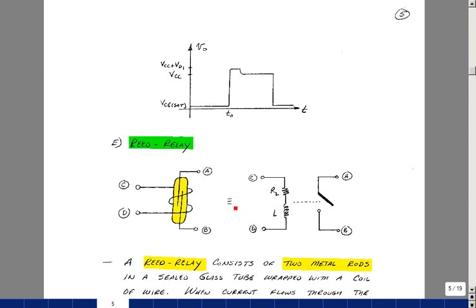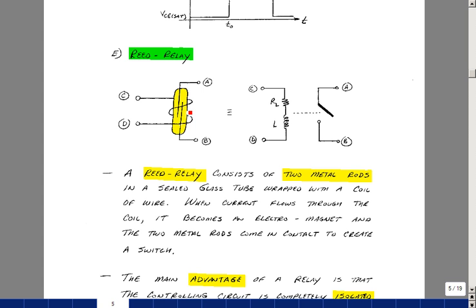The relay we're going to use in lab is called a reed relay. What it is, it's two metal rods with a coil wrapped around it. When voltage is applied to the coil, which has some inductance and some series resistance, it creates an electromagnet. That closes the contacts, and we get points A and B shorted together.